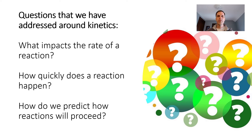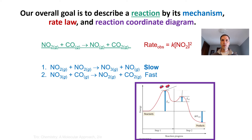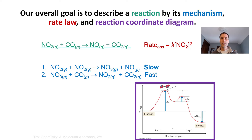As we've been talking about kinetics, there are a couple of different things we've hit so far: the impact of what kinds of things affect the rate of a reaction, how quickly reactions actually occur, and how do we make predictions about how reactions are moving and progressing. Today we're going to understand why reactions have different rate laws, how a step-by-step process impacts the rate, and how catalysts impact reactions.